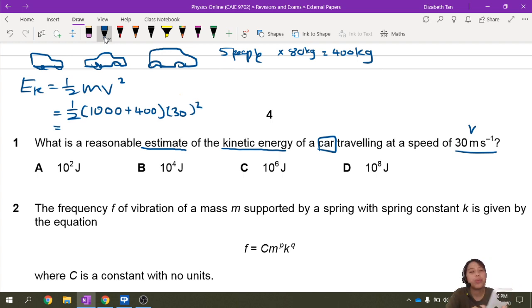But let's see how this works out. So half times 1400 times 30 squared. Wow. That is a lot of energy. So 630,000 joules. And how many zeros are those?